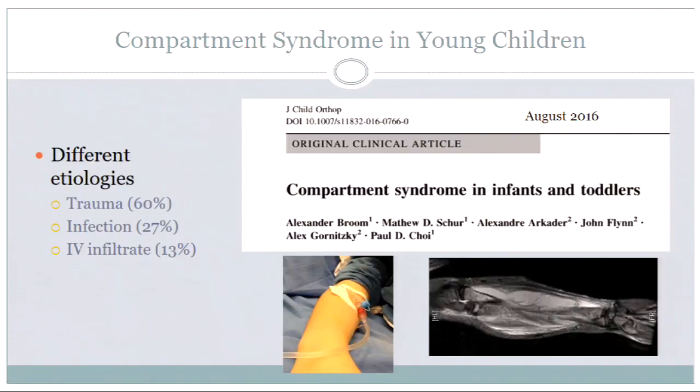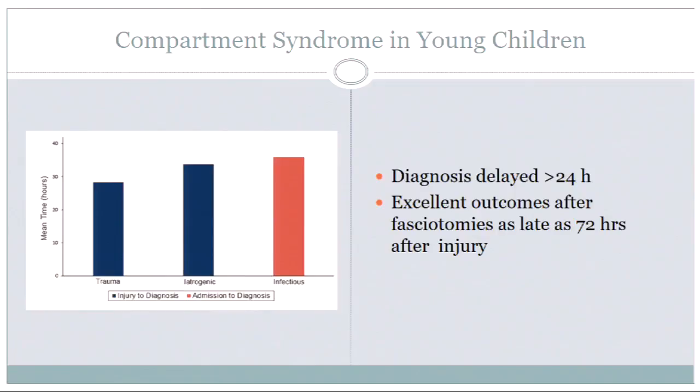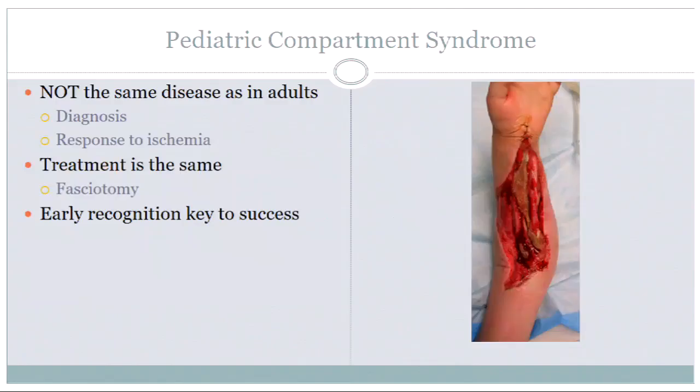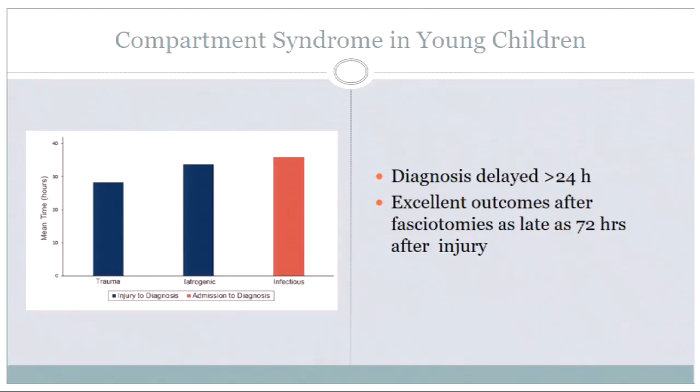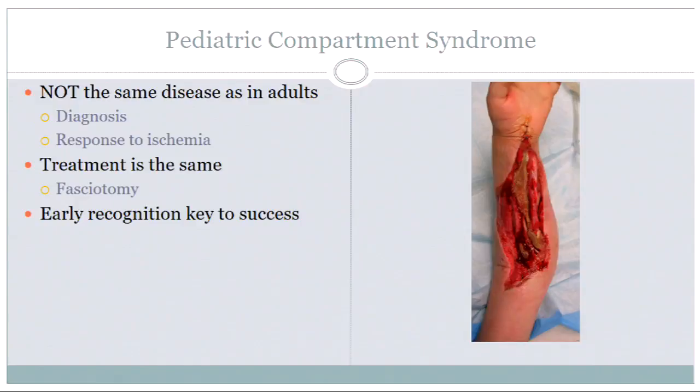So what I'm trying to say is: make the diagnosis and treat it. If you're wrong, it's probably not going to be that often. And if you're correct, you hit a home run. Summary: it's not the same as adults despite the same tropes. Treatment is fasciotomy. The last key point is to get used to making this diagnosis and just taking it by the horns and making the treatment plan for it.